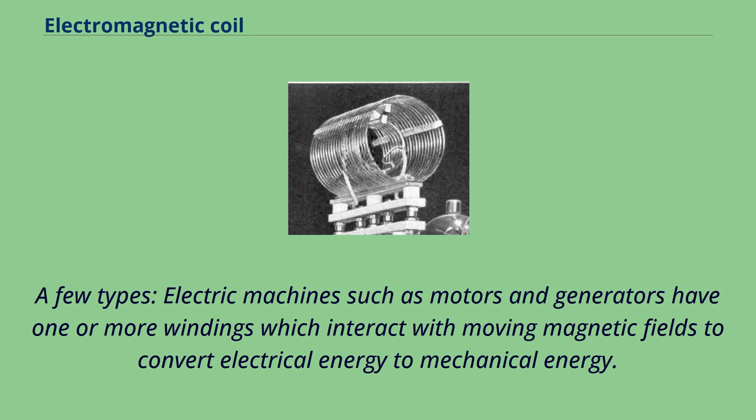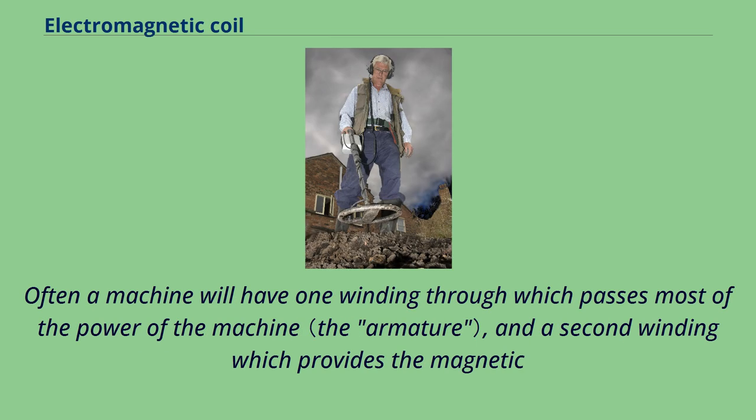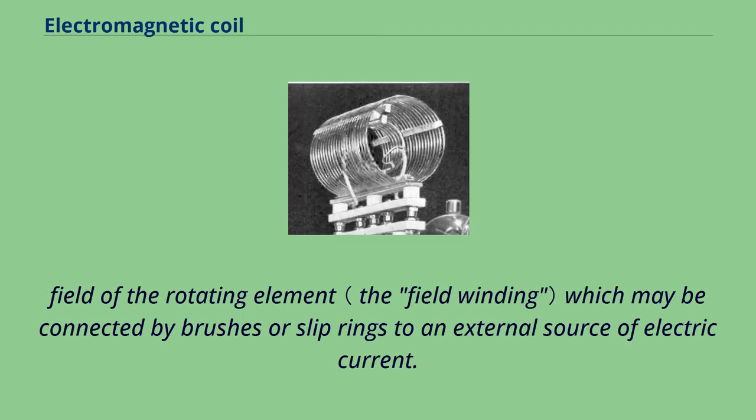Electric machines such as motors and generators have one or more windings which interact with moving magnetic fields to convert electrical energy to mechanical energy. Often a machine will have one winding through which passes most of the power of the machine, and a second winding which provides the magnetic field of the rotating element which may be connected by brushes or slip rings to an external source of electric current.